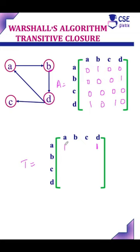Similarly, a to a has a path through b and d, represented as 1. A to c has a path through vertices b and d, and a to b has a direct path.